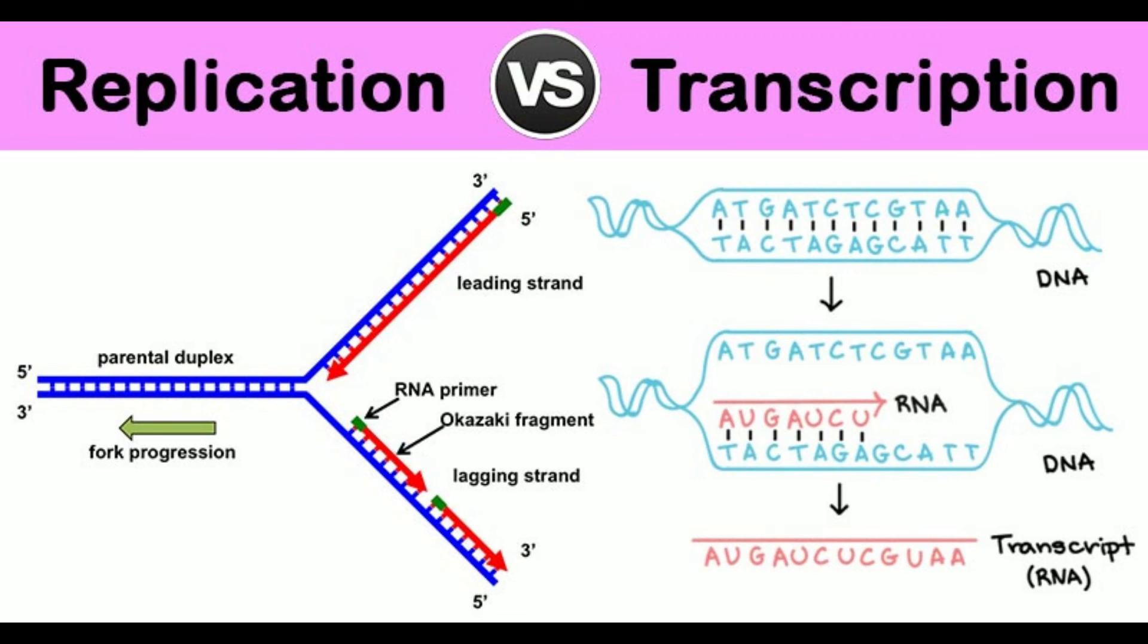17. Processing: Replication produces normal DNA molecules that do not need any processing. Transcription produces primary RNA transcript molecules which need processing to acquire final form and size.